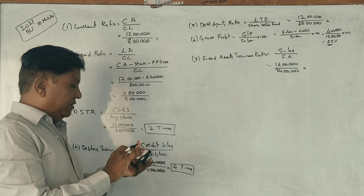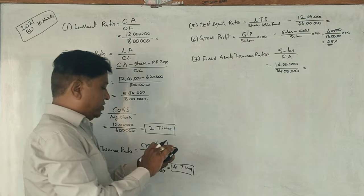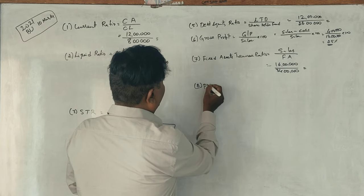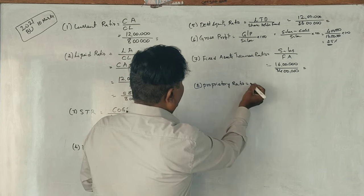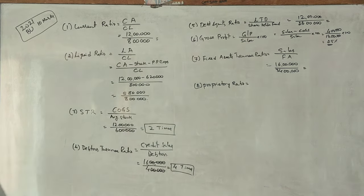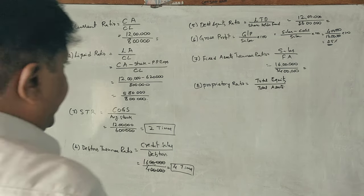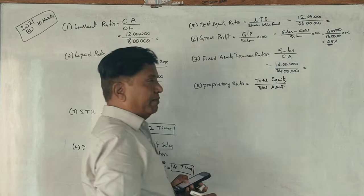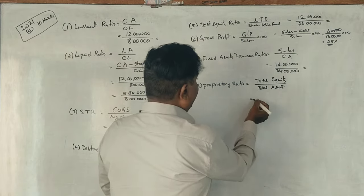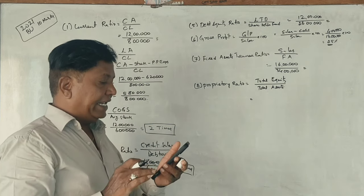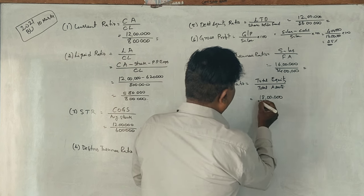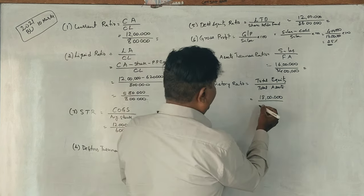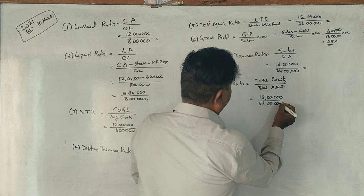Last, proprietary ratio. The formula is total equity divided by total assets. Total equity includes equity share capital of 10 lakhs and reserves and surplus of 8 lakhs, totalling 18 lakhs. Total assets is 46 lakhs. So proprietary ratio is 18 lakhs divided by 46 lakhs, which equals 0.39 is to 1.